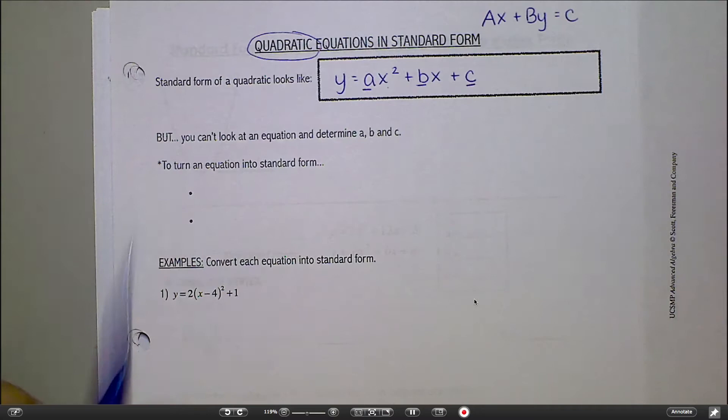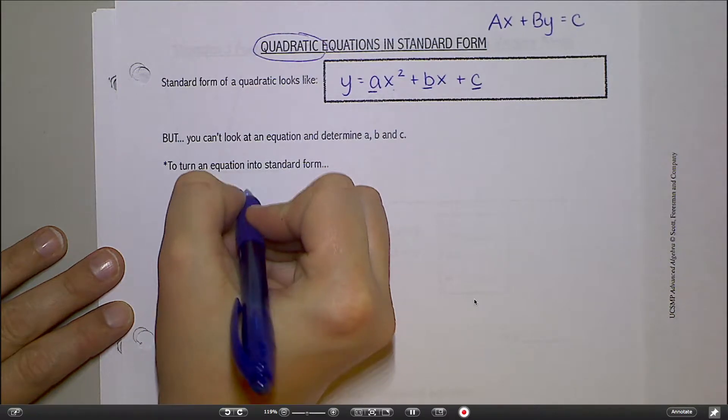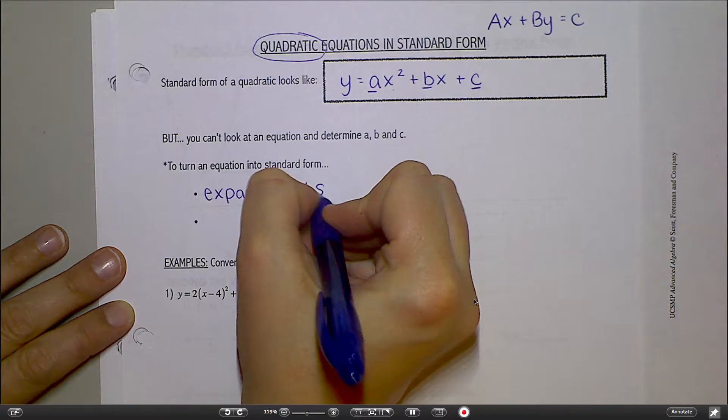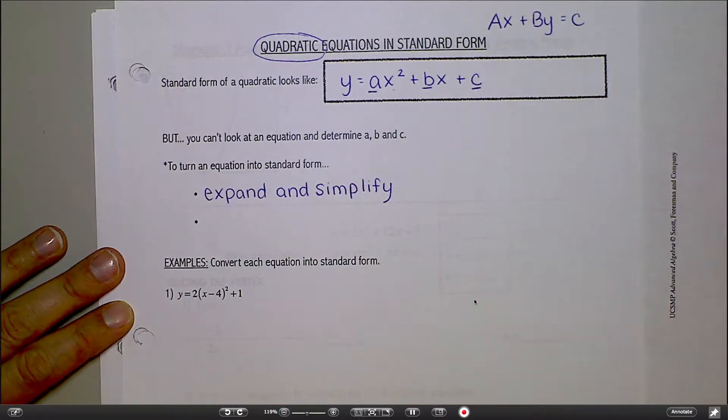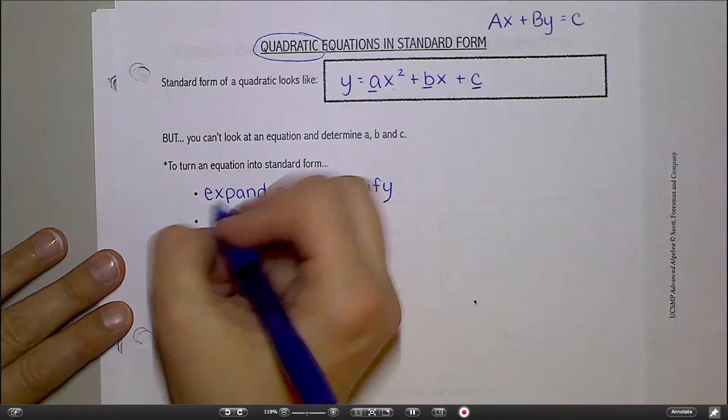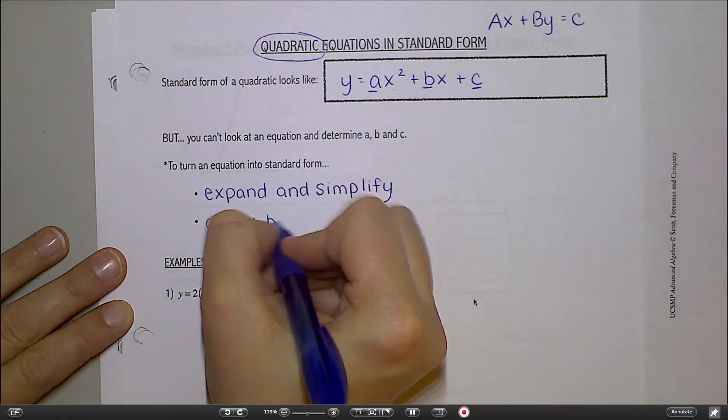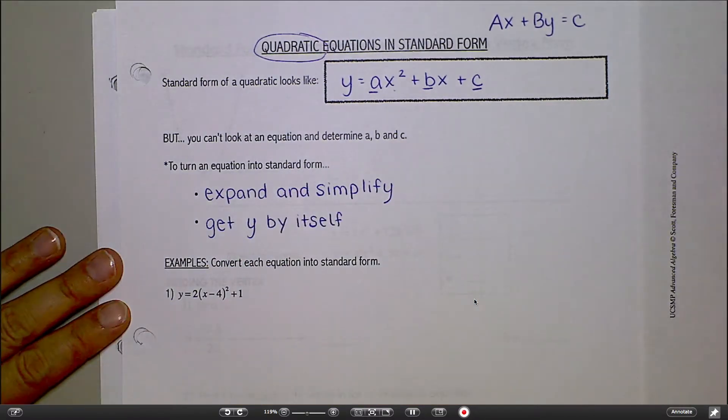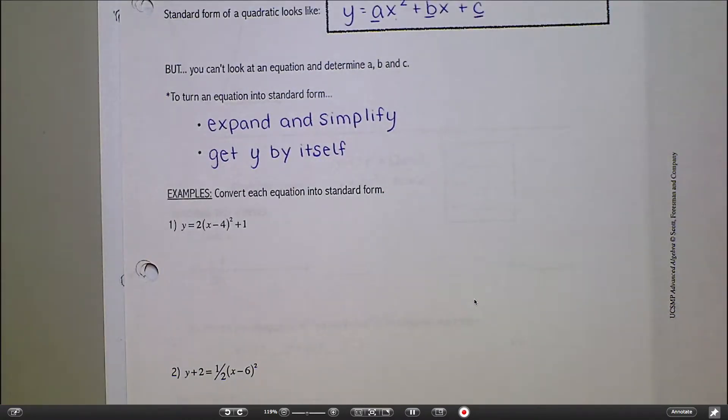So your steps to turning an equation into standard form are to expand and simplify, which are words you should be familiar with from a couple of lessons ago. And then the second step is to get Y by itself. So to do this, you're just doing the math. No fancy tricks.